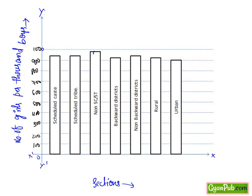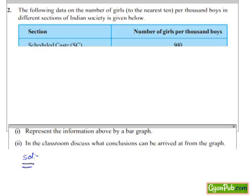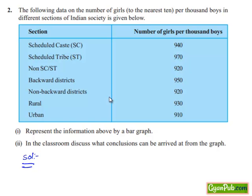Now let's look at the second part: in the classroom, discuss what conclusions can be arrived at from the graph. From the above graph, we can observe two conclusions. The number of girls to the nearest 10 per thousand boys is maximum in the ST section — that is 970 — and minimum in the urban section, which is 910.